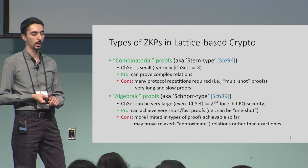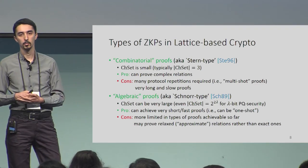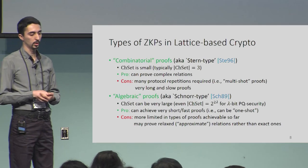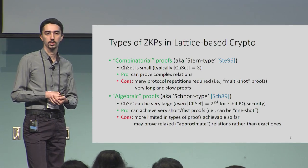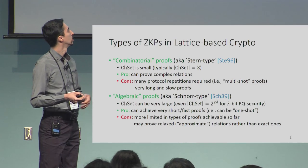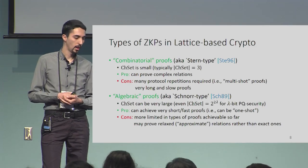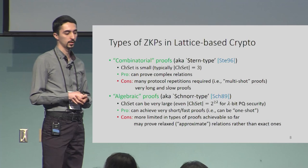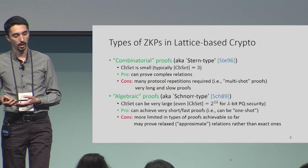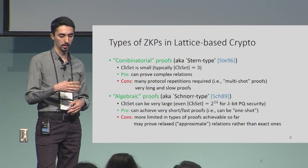The second type is algebraic proofs, based on Schnorr's protocol, where the challenge set can be basically as large as you want. You do not need to repeat the protocol, so you get very short and efficient one-shot proofs. The disadvantage is that algebraic proofs are more limited in the types of relations achievable, and the relation you prove may be relaxed or approximate.